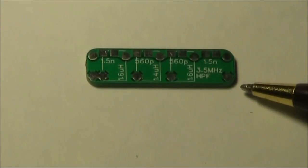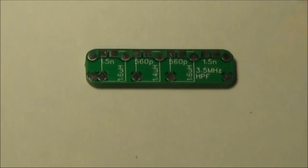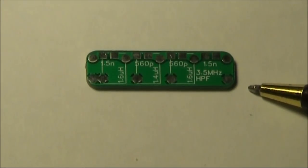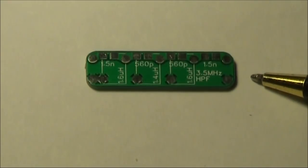It greatly improves reception, particularly on 80m. The component values you see here are for 3.5MHz, as per the VK3IL design.